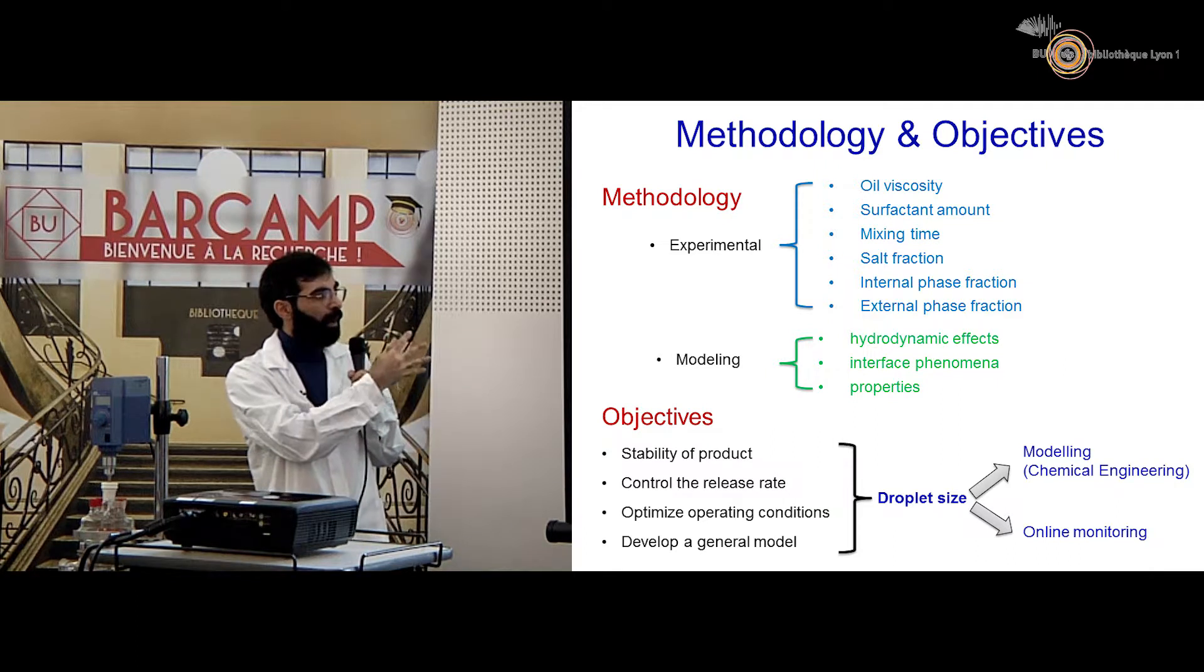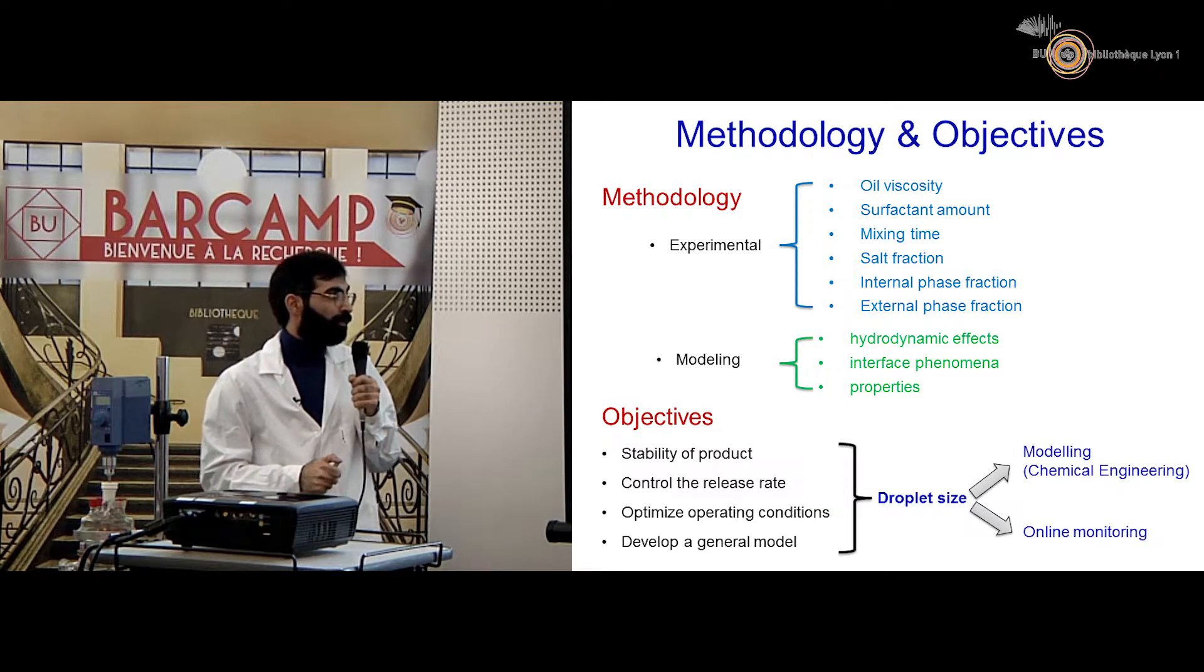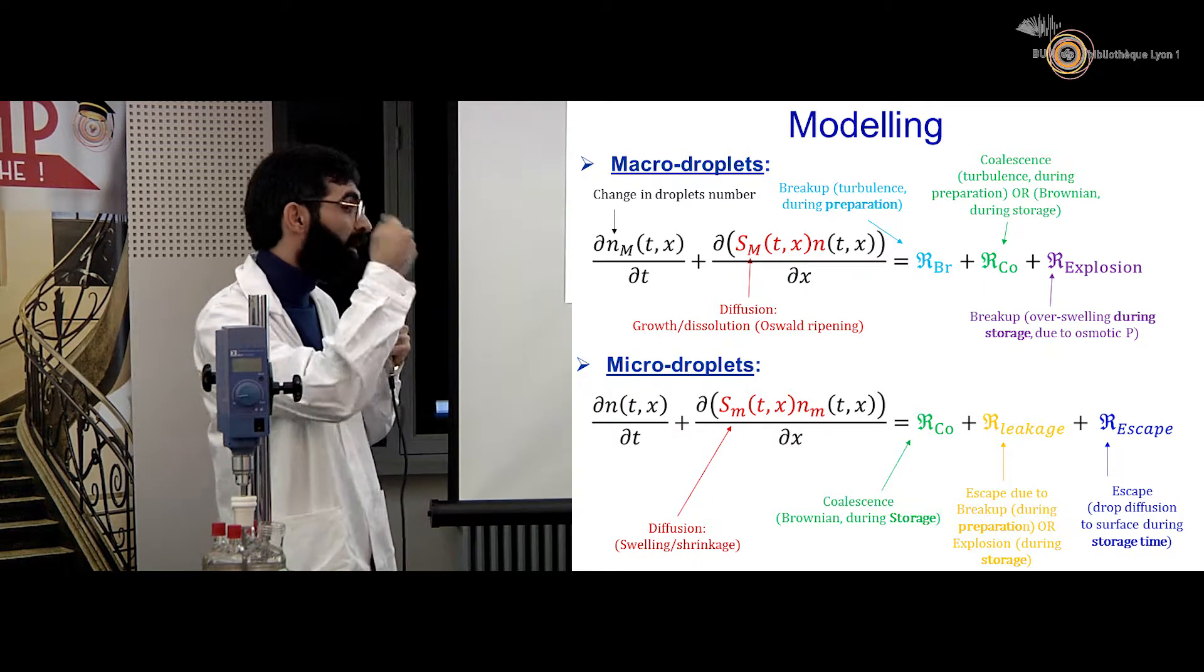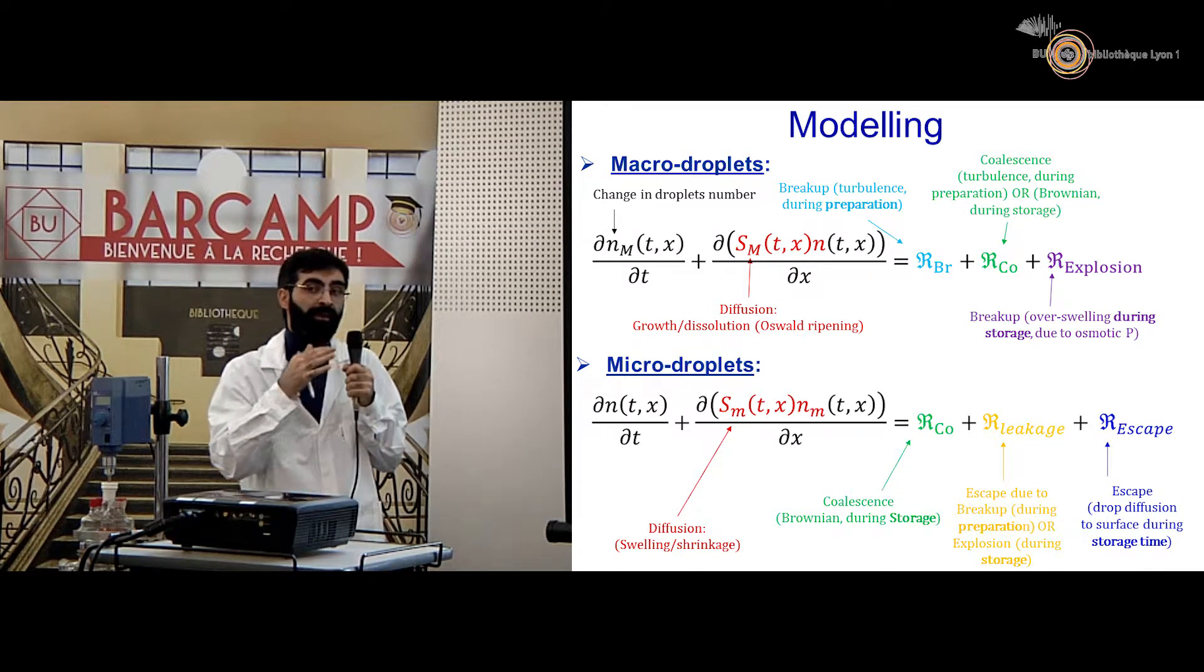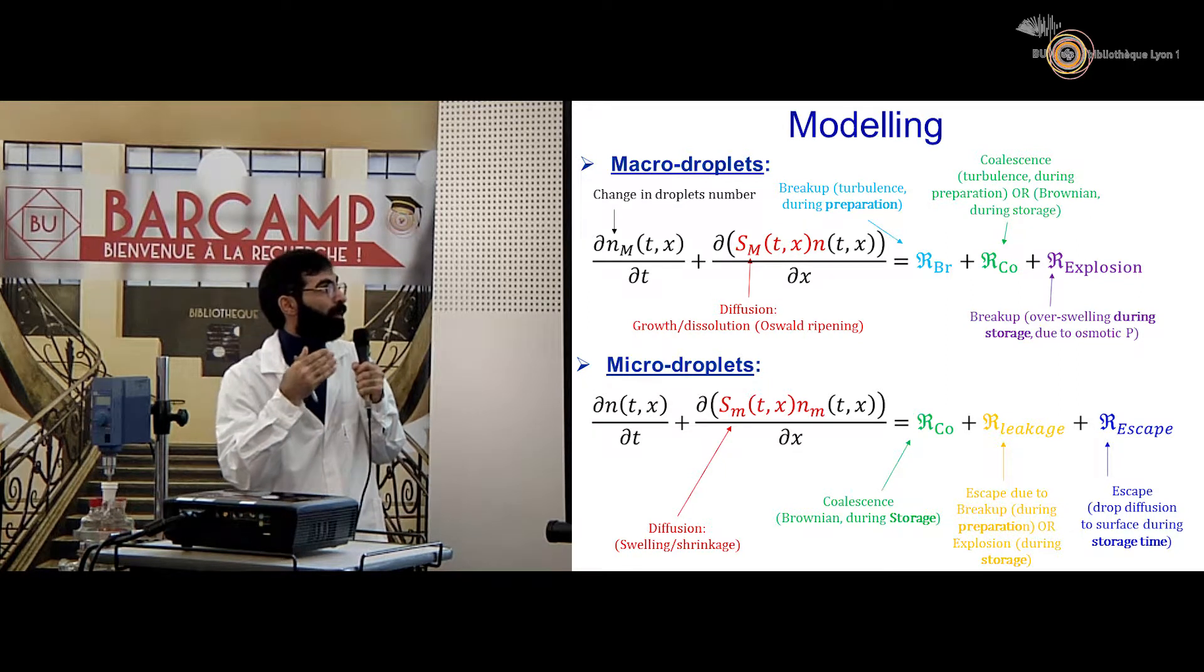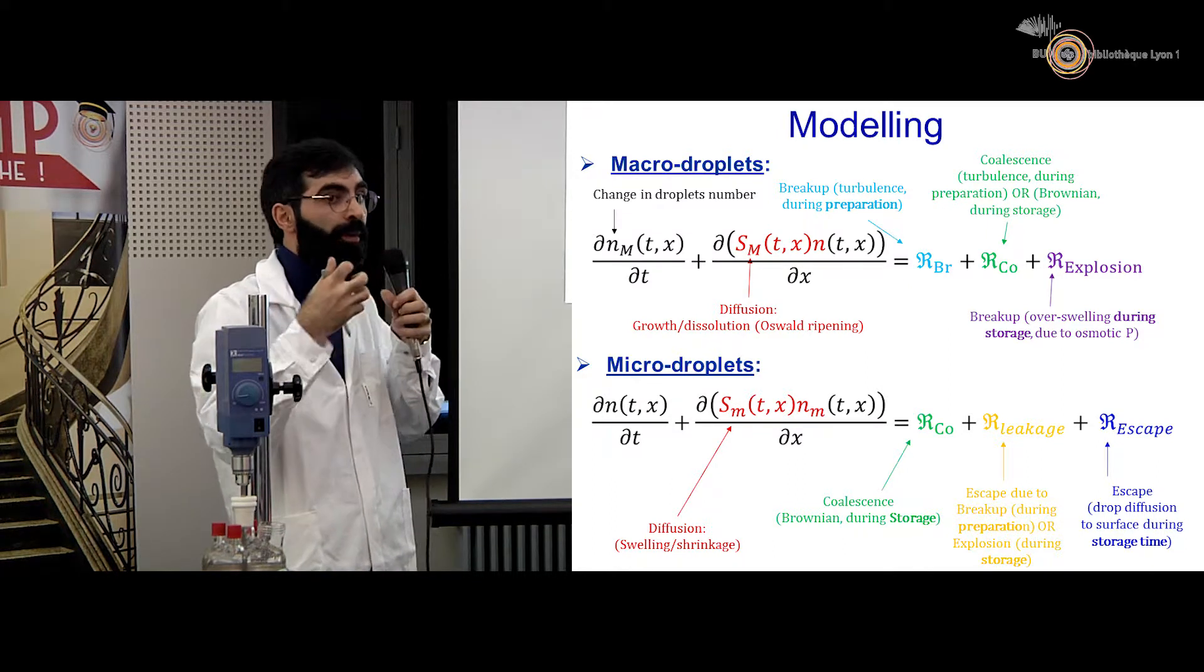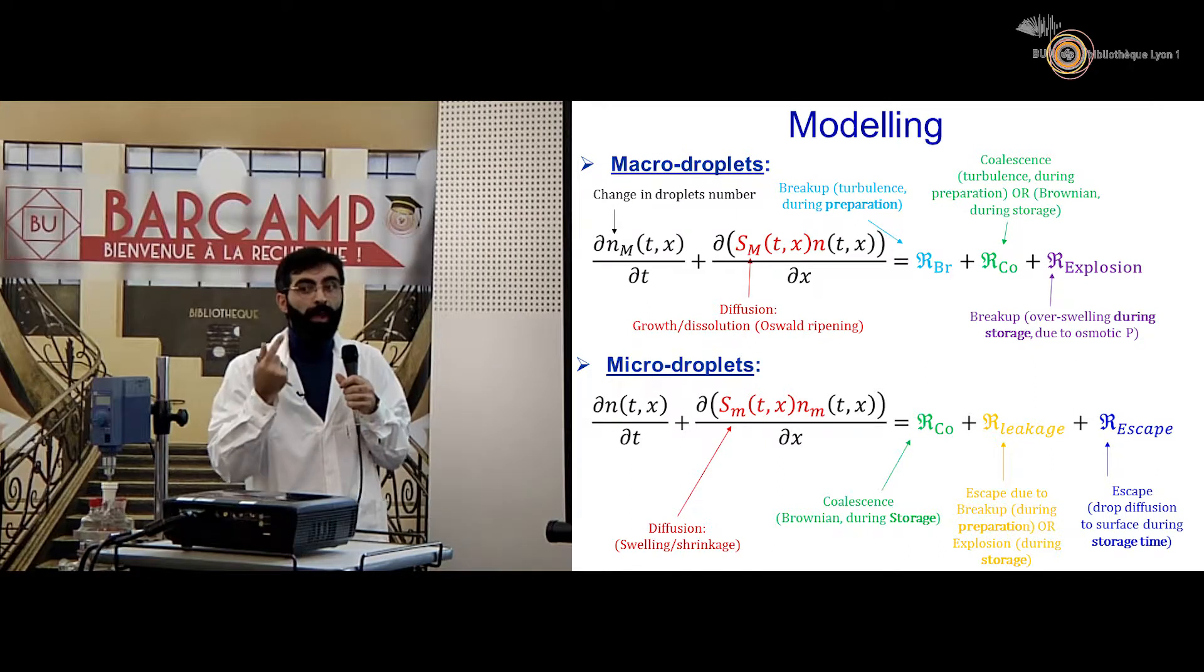To find the droplet size we have modeling which is a chemical engineering part and we have online monitoring. For the modeling we developed two big equations which are population balance equations, one for the internal droplets and one for the external droplets. They will consider all the phenomena happening inside during our preparation of double emulsion or the stability time of our double emulsion. For example, breakage of double emulsion during the preparation is when the droplets will break to two or three other droplets, and coalescence is when two droplets will join and they will make one droplet.